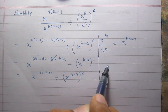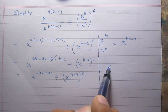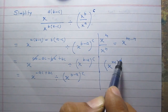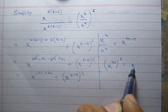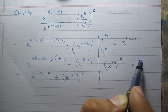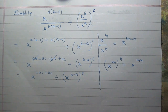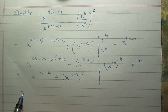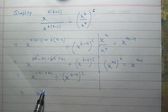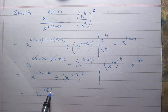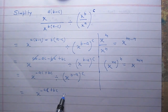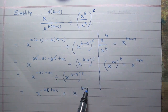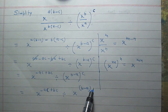Now, let us consider another law of exponents. It is x raised to the power m, whole raised to the power n, is equal to x raised to the power m multiplied by n. So, using this rule, we can write the second term as: the first part is as it is, and the second part is x raised to the power b minus a, multiplied by c.